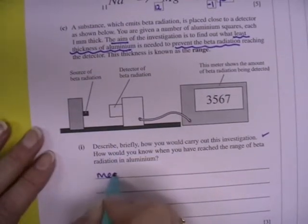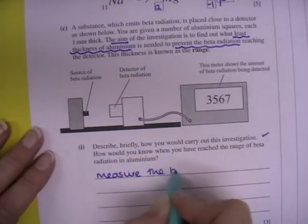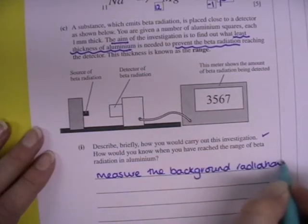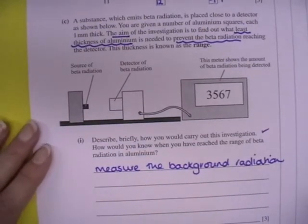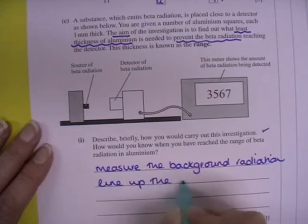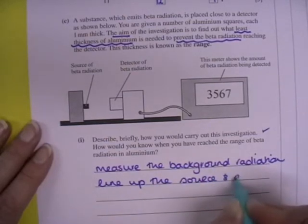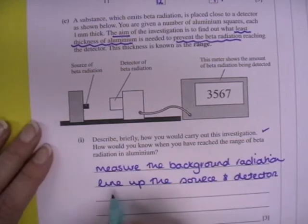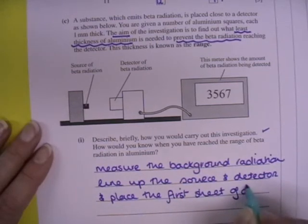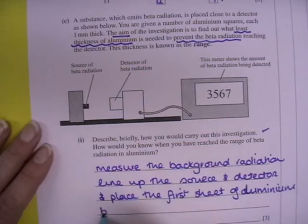Well, the first thing I would do is measure the background radiation. So this is the level of background radiation that exists naturally due to radon gas and so on. So we remove all the sources and measure the background radiation. Then line up the source and detector and place the first sheet of aluminum between the source and the detector.